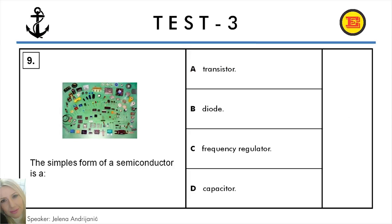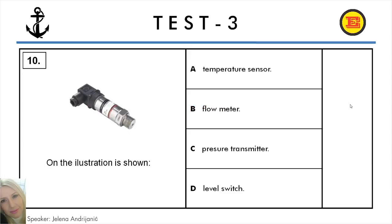Question number 9. The simplest form of a semiconductor is: A: Transistor, B: Diode, C: Frequency regulator, D: Capacitor. And the correct answer is B: Diode.